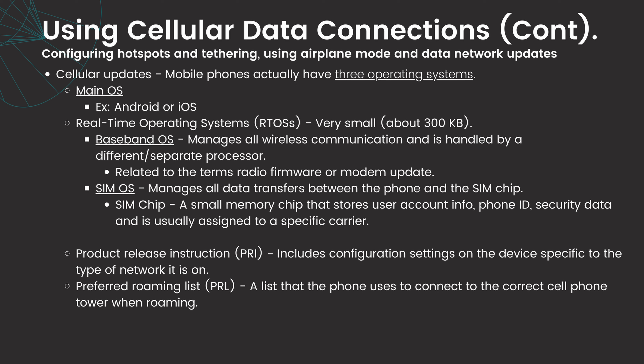Just as laptops and desktops have operating systems and require updates, mobile phones also have many different types of operating systems and require updates. First, there is the main OS, for example Android or iOS. Then there are real-time operating systems or RTOSs, which have very small file sizes of around 300 kilobytes. There is also a baseband OS which manages all wireless communications and is handled by a separate processor.